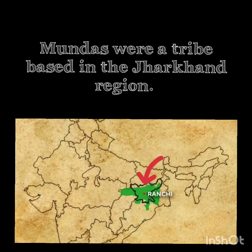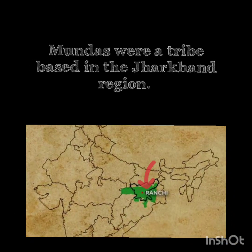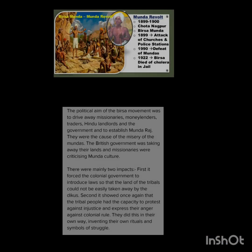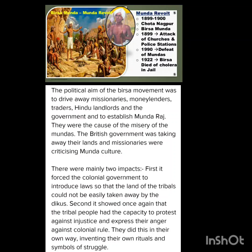Moving on to the Munda rebellion of 1895 to 1900: the Mundas were a tribe based in the Jharkhand region, which was then part of Bihar. They had an indigenous system called khuntkari, under which they enjoyed customary rights and there was no landlord class. Under the British, this system was replaced by the oppressive zamindar system. The Mundas were angered by the growing instances of their land being grabbed by non-tribals.